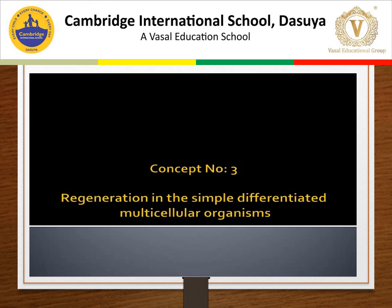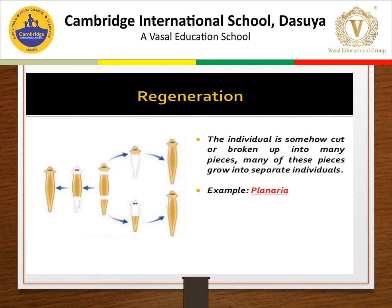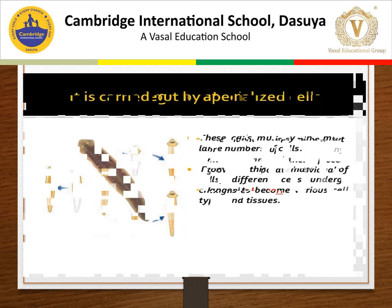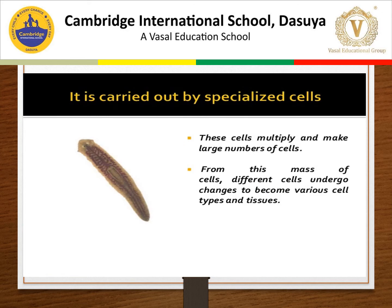Regeneration is getting back a whole new organism from a cut part of an organism. An individual is somehow cut or broken down into many pieces, and many of those pieces grow into separate individuals. An example is Planaria. Regeneration is possible because specialized cells multiply and make a large number of cells. From this mass of cells, different cells change to become various cell types and tissues.